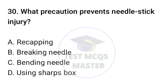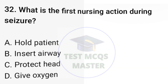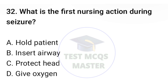Question number thirty: Which precaution prevents needle stick injury? The correct option is D: using a sharps box. Question number thirty-one: Which diet is needed in anemia? The correct option is C: iron. Question number thirty-two: What is the first nursing action during a seizure? The correct option is C: protect the head.